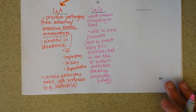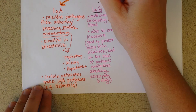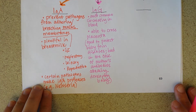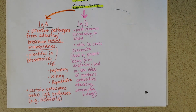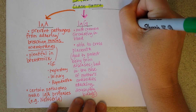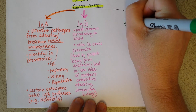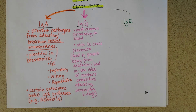So if someone were going to ask you what's the most common kind of antibody in the body, you could probably say IgG and be correct most of the time. And then IgE is the third kind of antibody I'd like to talk about.